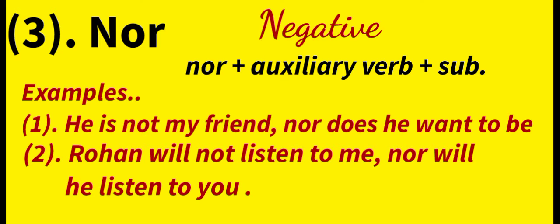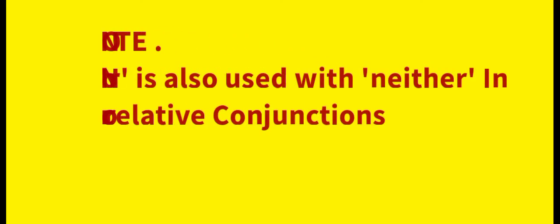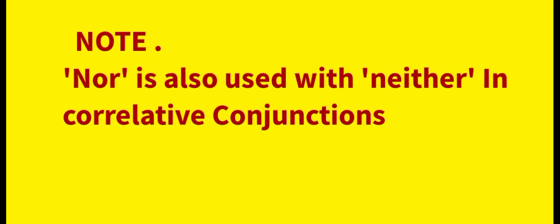An important note: 'Nor' is also used with 'neither' as a correlative conjunction. We have three kinds of conjunctions; in this first video we have seen coordinating conjunctions. We will see correlative conjunctions — including 'neither...nor' — in a later part.